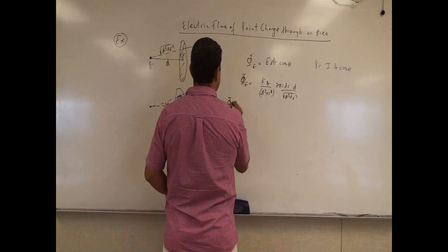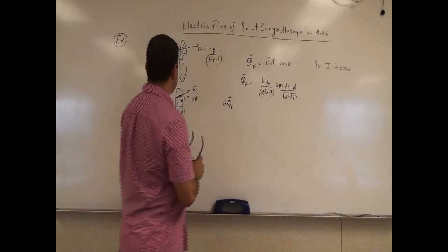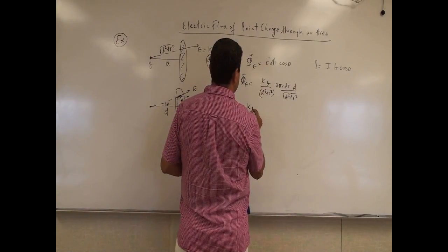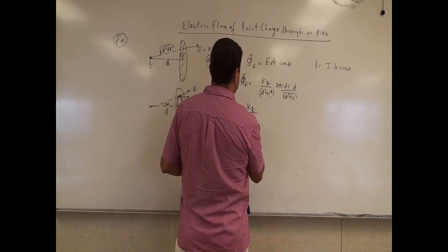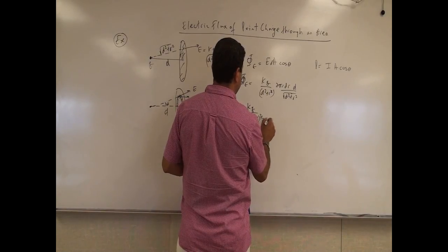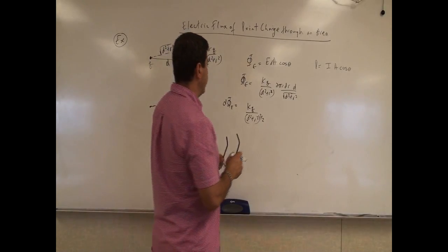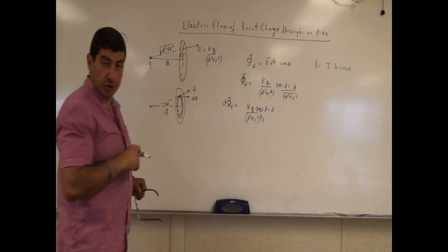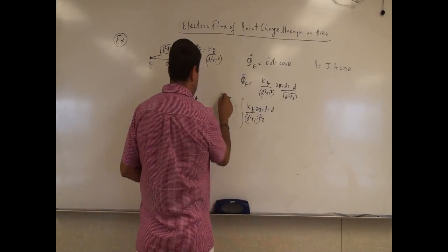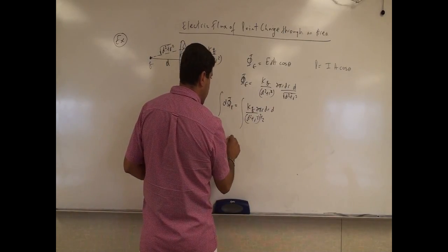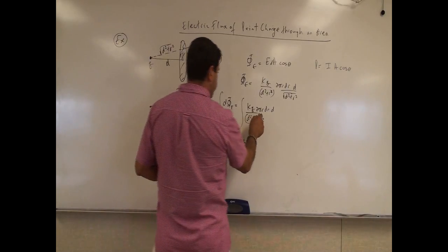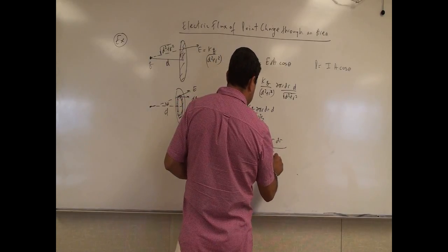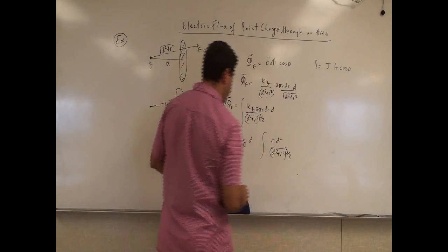So then we can factor out everything. This is the electrical flux going through a certain ring within the plate. So we can say here KQ over D squared plus R squared to the three-halves power. Then we integrate this, take everything out of the integral that doesn't need to be integrated. The electrical flux is going to be 2πKQ, the D comes out, then we have the integral of R dR over D squared plus R squared to the three-halves power.